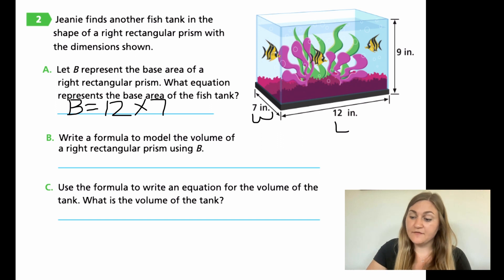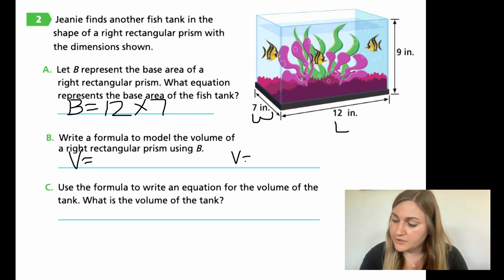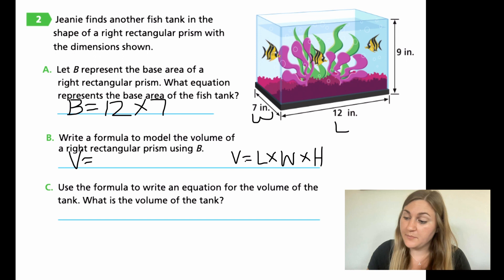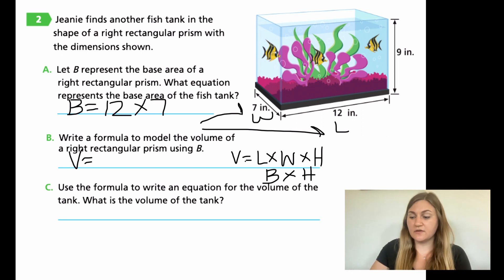Moving down to B, it says write a formula to model the volume of a right rectangular prism using B. Notice it doesn't say anything about the fish tank. So we're not actually talking about the specific problem. We're just looking for a general formula here. So write a formula to model volume. So remember, we're going to be starting with volume, but we want B to be our base. So we know that normally volume is length times width times height. But in this problem, what it's looking for is my base. And if you remember up here, my base is equal to my width and my length. So if I take out my length and my width and I just write base, what I have left over is my height. So that's what it was looking for here. Volume equals base times height.